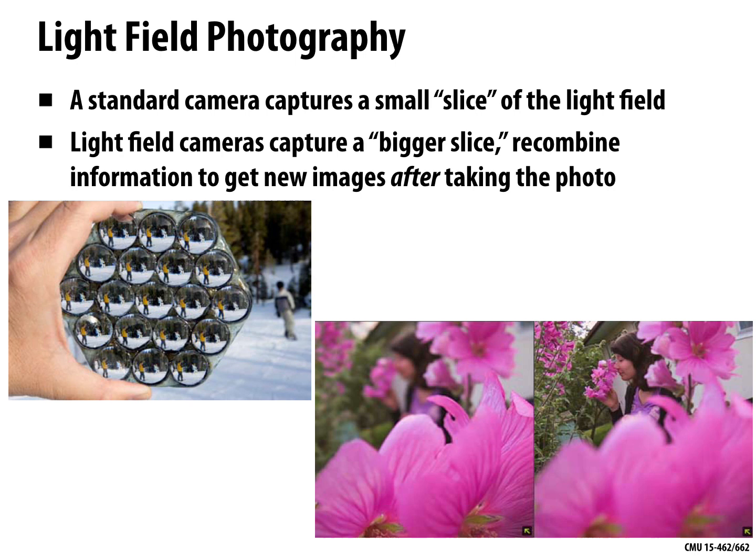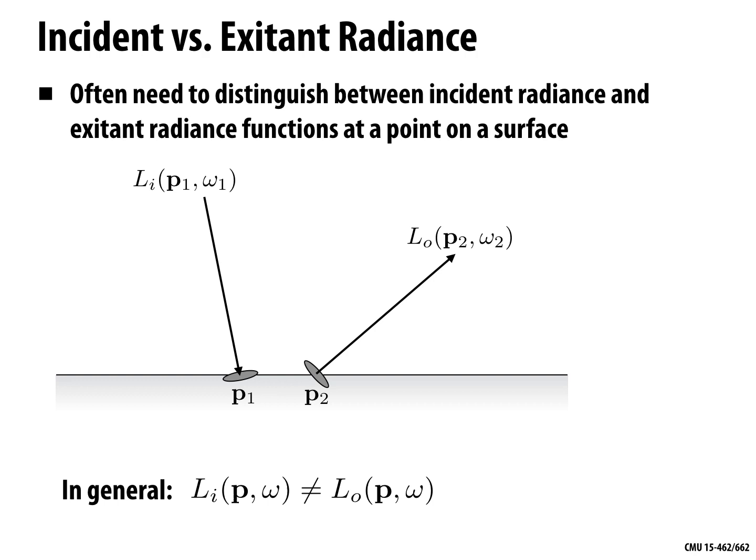One thing to keep track of carefully is the distinction between incident and exident radiance — is this radiance coming in or going out? We use L sub I for incident radiance (coming in) and L sub O for exident radiance (going out). In general there's no reason why these should be the same. A great example is a light bulb: there's a lot more light going out than coming in.